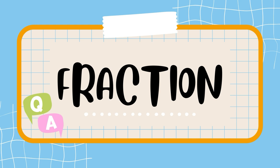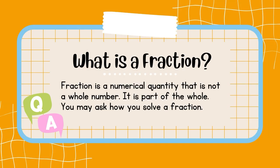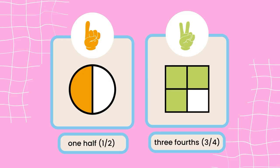First, what is a fraction? A fraction is a numerical quantity that is not a whole number. It is part of the whole. In these basic examples, we have 1/2 and 3/4. The shaded parts are what we call the numerator, and the other half that is not shaded plus the shaded parts are what we call the denominator. That is what makes them a fraction.